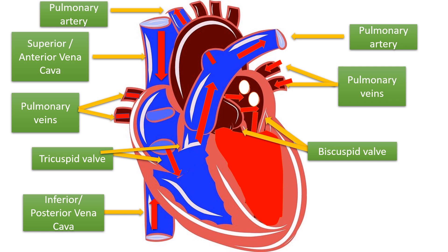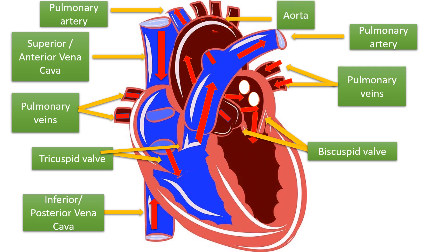When the left ventricle contracts, it pumps the oxygenated blood with pressure into the largest artery, called the aorta. From the aorta, the oxygenated blood reaches each and every part of the body.